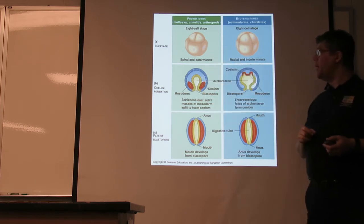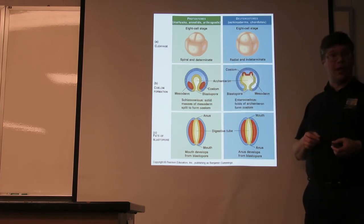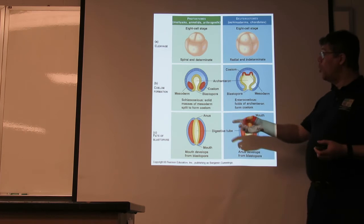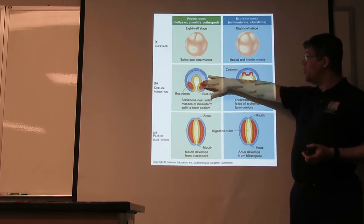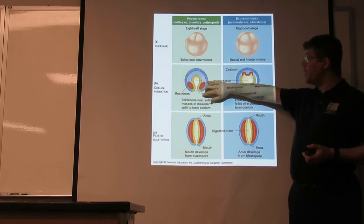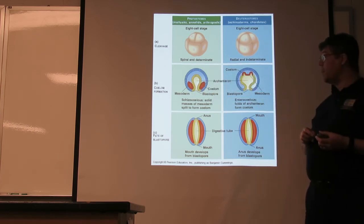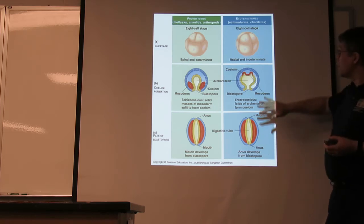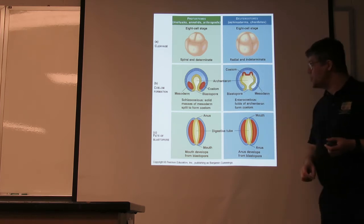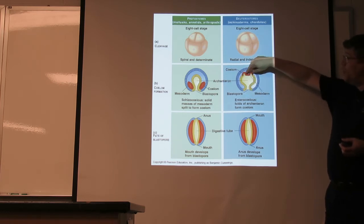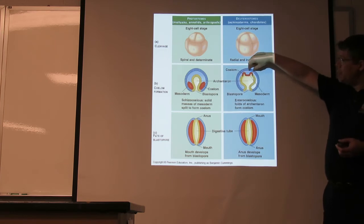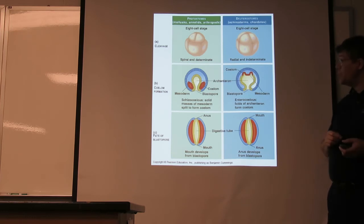If we have a coelom, in the protostomes it's either a pseudocoelom, or typically a schizocoelom — 'schizo' meaning split — where the mass of mesoderm, that middle layer, gets a hole developing inside it, splitting apart. Deuterostomes, in contrast, are characteristically enterocoelous, meaning that what will become the mesoderm starts out as endoderm and then pockets off and buds from there, and then the coelom is formed as a space there.